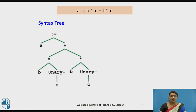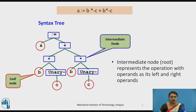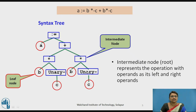Consider the syntax tree. The statement given here is: A assigns to B multiplied by minus C, plus B multiplied by minus C, and the syntax tree is generated for this. In a syntax tree, the leaf nodes represent the operands and the internal nodes represent the operation — with one or two operands. For a binary operation, the left and right nodes represent operand 1 and operand 2 respectively. For a unary operation, a single node represents its operand. Here, unary minus represents only one operand and the multiplication operator represents two operands.